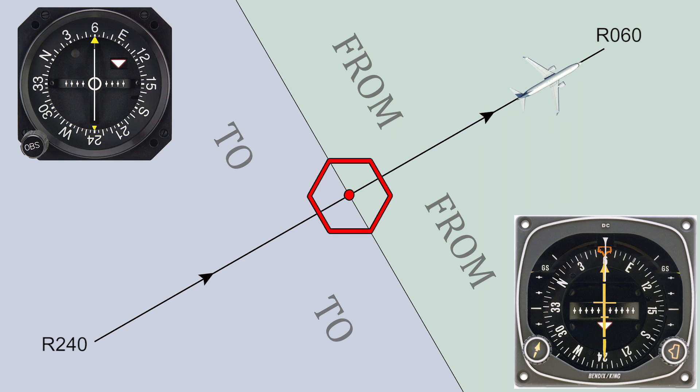If we want to fly a different course from the station, we simply change the course on the indicator when we are above the station.